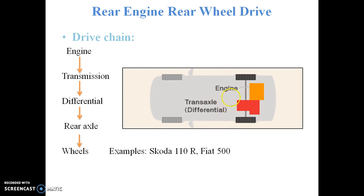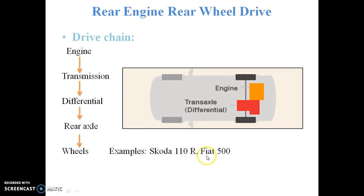Since the engine is mounted at the rear portion of the automobile, the disadvantage is that there is no natural cooling of the engine. Examples of this type are the Skoda 110R and the Fiat 500.